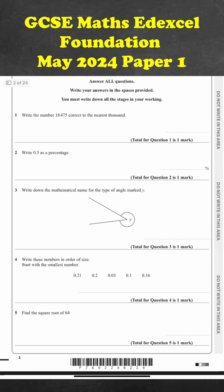Question number one. Write the number 18475 correct to the nearest thousand. So our answer is either going to be 18,000 or 19,000, as they are the two nearest thousands. We have 475, which is less than 500, so we're going to round down to 18,000.